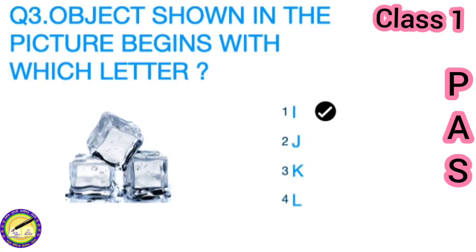Third question is: object shown in the picture begins with which letter? The picture shows ice. We have four options: I, J, K, L. This is the picture of ice. I for ice. So you have to put a tick on the first option, I.